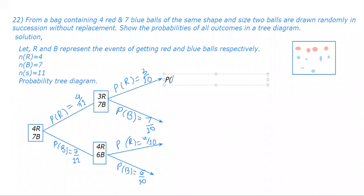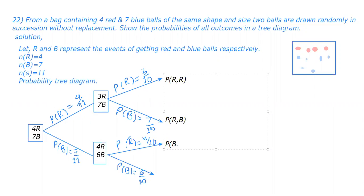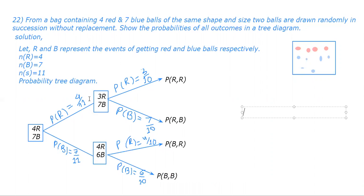From the tree diagram, the four outcomes are: probability of first red and second red (R,R), first red and second blue (R,B), first blue and second red (B,R), and first blue and second blue (B,B). If asked to calculate: P(R,R) = 4/11 × 3/10, P(R,B) = 4/11 × 7/10, P(B,R) = 7/11 × 4/10, and P(B,B) = 7/11 × 6/10.